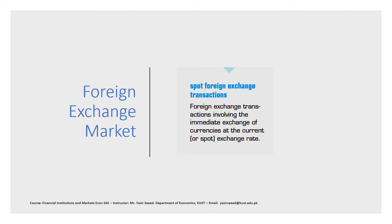As a result, from 1944 to 1971, the Bretton Woods agreement called for exchange rates of one currency for another to be fixed within narrow bands around a specified rate, with the help of government intervention. However, the Bretton Woods agreement led to a situation in which some currencies, such as the US dollar, became very overvalued.